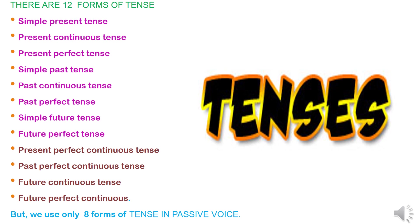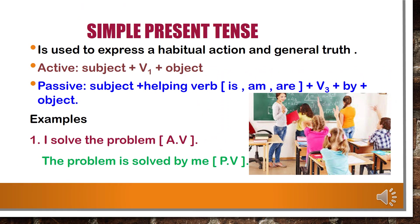There are 12 forms of tense but only 8 forms of tense we are going to use in passive voice: simple present tense, present continuous tense, present perfect tense, simple past tense, past continuous tense, past perfect tense, simple future tense, and future perfect tense. We cannot make passive voice in present perfect continuous tense, past perfect continuous tense, future continuous tense, and future perfect continuous tense.